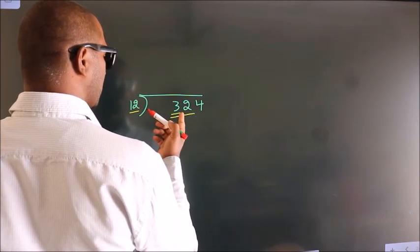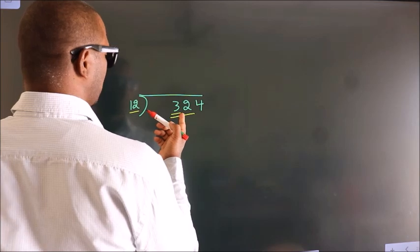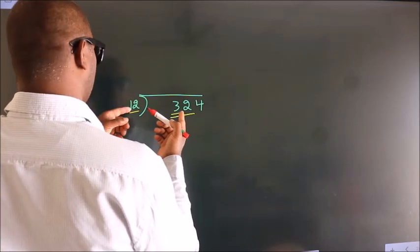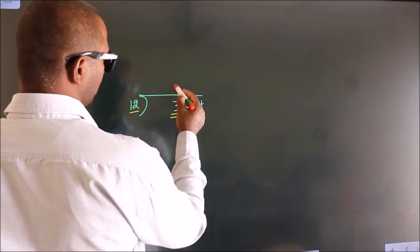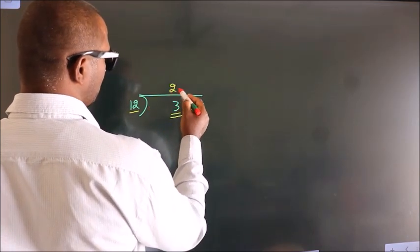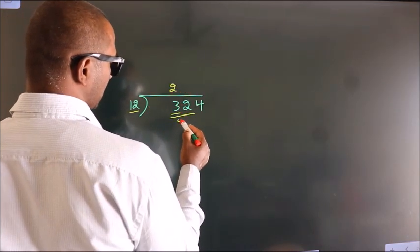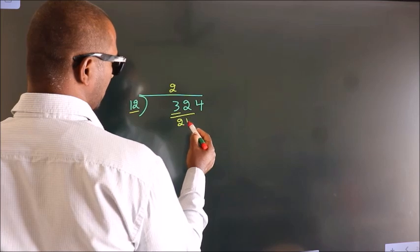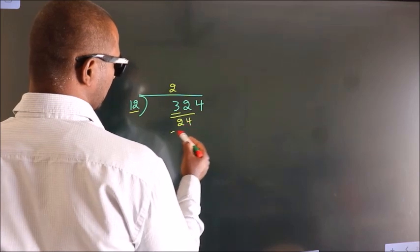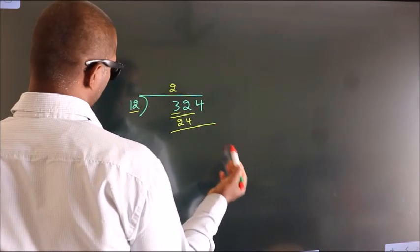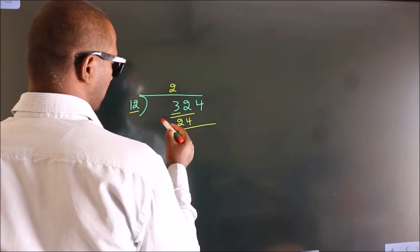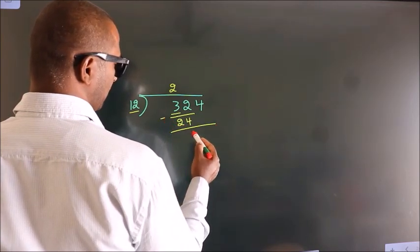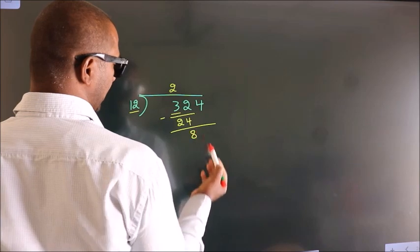A number close to 32. In 12 table is 12 twos, 24. Now we should subtract. We get 8.